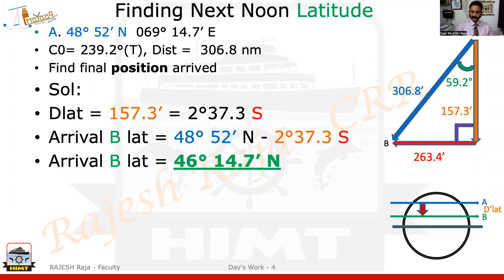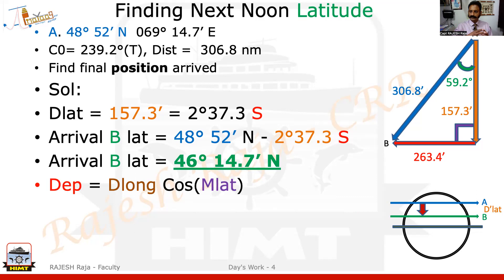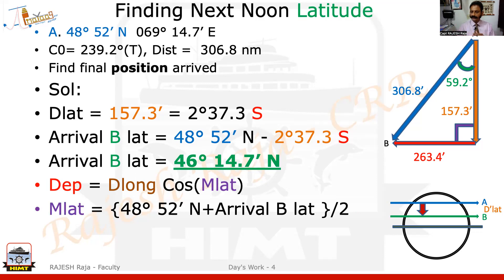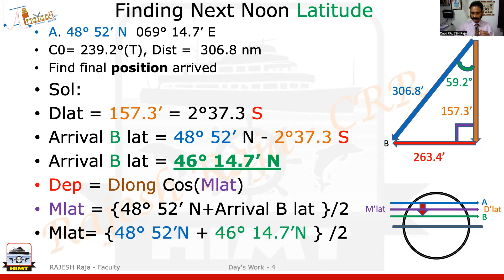So this green color line is your final latitude. I've already got one answer, which is your arrival latitude — D's latitude. DLAT was easy and I found out the final latitude. Now let's go for the longitude. Longitude cannot be calculated directly from this triangle because we have something called departure, so I have to convert the departure into DLONG. The formula for that is: departure equals DLONG times cosine mean latitude. I have departure from the previous triangle, which is 263.4. I need to find mean latitude. Both positions are in the same hemisphere — north and north — so I can simply do an algebraic sum. I get the mean latitude as 47°33.4'.